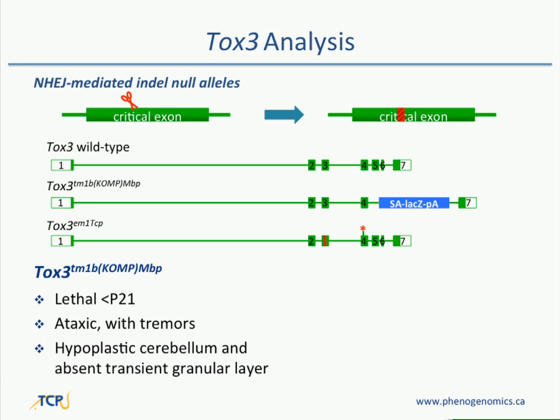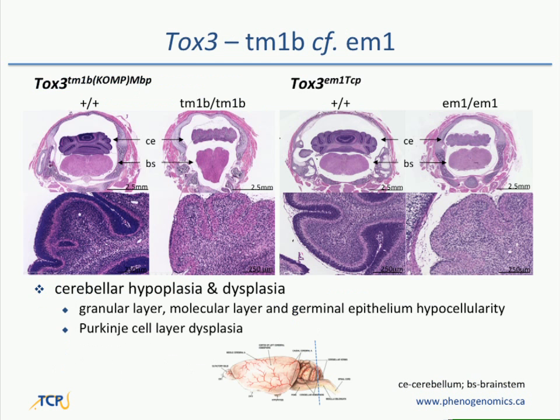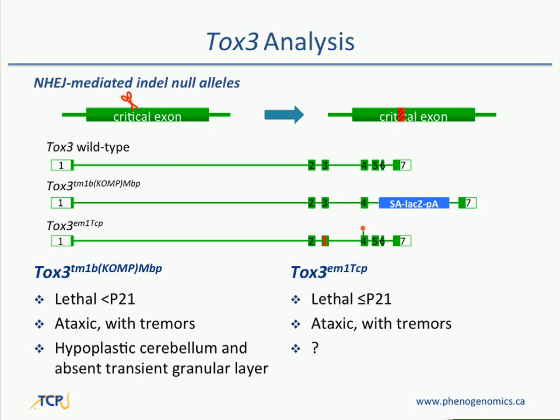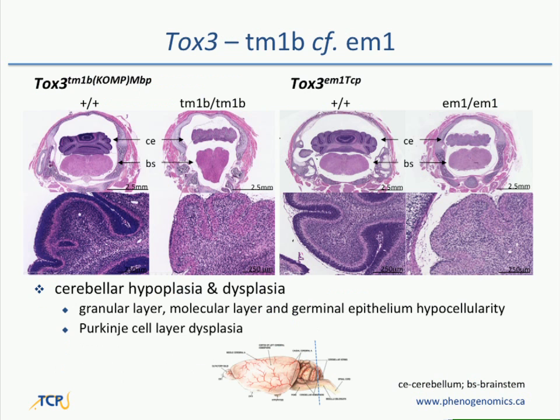Our TOX3 CAS9 mutants were born and showed exactly the same phenotype at cage level. When we looked at both 3D imaging by MRI and brain histochemistry, what you see is that in a wild-type mouse you have a nice granular layer in the cerebellum, and in both our TM1b and our CAS9 alleles, that layer is completely absent. We thought it was great that we were seeing essentially the same phenotype in two different alleles — a CAS9 and an ES cell-derived allele.